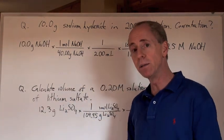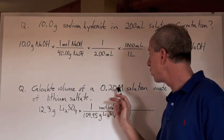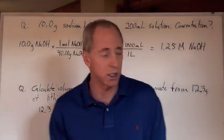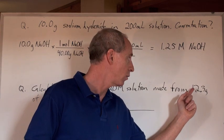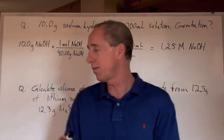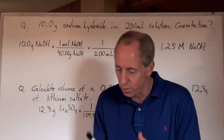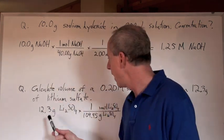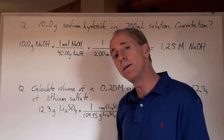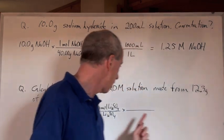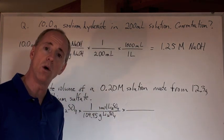Now the next one is a little different. You calculate the volume of a 0.20 mol/L solution, given the mass it was formed from — 12.3 grams — and the chemical is lithium sulfate. I'm starting with the mass again: 12.3 grams of lithium sulfate. I'm going to find the molar mass of lithium sulfate, which is 109.95 grams of lithium sulfate per mole.